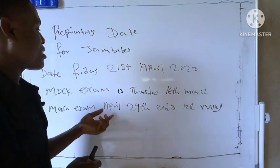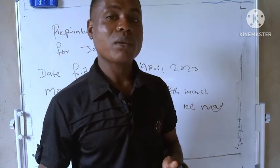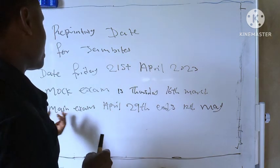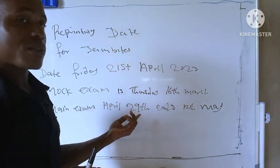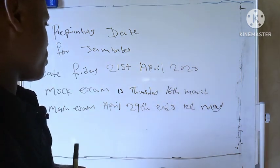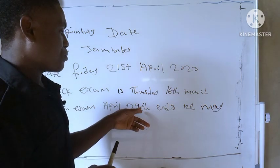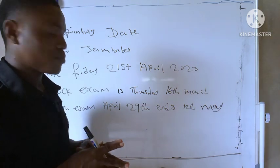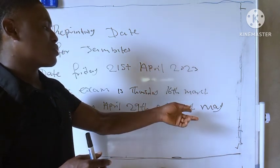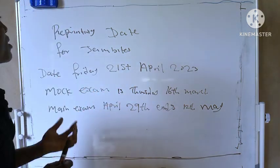The main exam is starting on April 29th and ends on 12th May. So the main exam starts on April 29th — write down the date. It's two weeks, starting from 29th April and ending on 12th of May. Just write down the date.